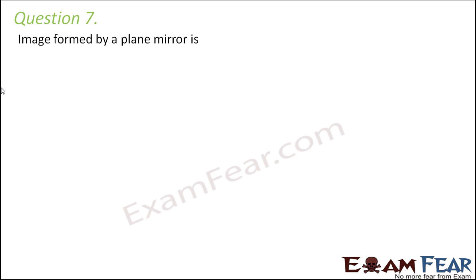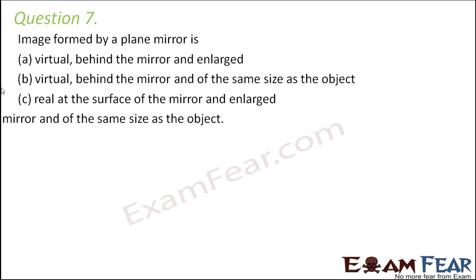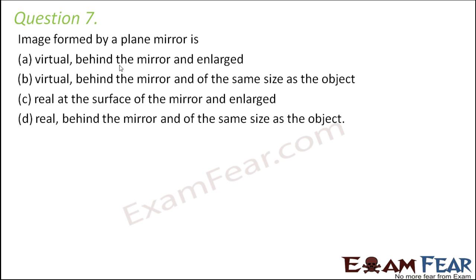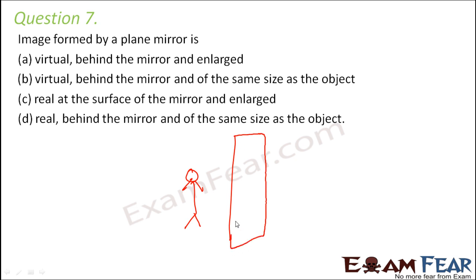Question number 7: image formed by a plane mirror. There are many different options, but a plane mirror never produces a real image, so options C and D are gone. The image is virtual and formed behind the mirror — on the other side. If this is the object and this is the plane mirror, the image is formed here. The size of the image is exactly the same as the size of the object, so option B is the right answer.